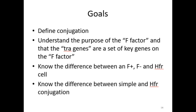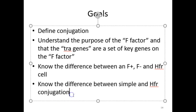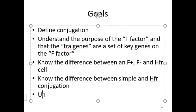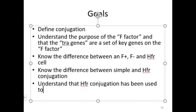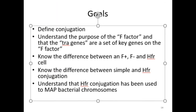The goals of this lecture are to define conjugation, understand the composition and purpose of the F-factor, know that the tra genes are a set of key genes within the F-factor, know the difference between an F-plus, F-minus, and HFR cell, and the difference between simple and HFR conjugation. One goal to add is to understand that HFR conjugation has been used to map bacterial chromosomes — that is, to locate specific genes in those chromosomes.